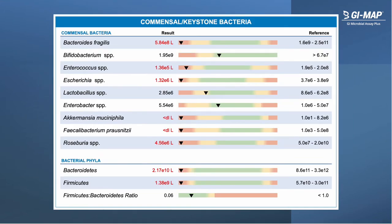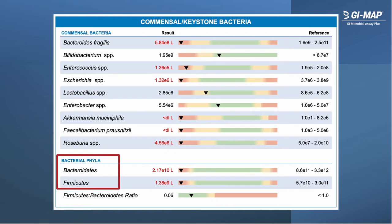Below the results for H. pylori on page two are the commensal and keystone bacteria. These are representative members of the normal microbiome that can provide key insights into the overall health and function of the microbiome. This set of keystone species includes, in particular, Akkermansia muciniphila, Faecalibacterium prausnitzii, and Roseburia, which all have especially important roles in the microbial ecosystem, such as promoting mucus production and the production of key short-chain fatty acids such as butyrate. Also note the phyla listed here — the Bacteroidetes and Firmicutes phyla — which provides a high-level view of the microbiome, indicating significant imbalance when these phyla are represented as high or low.